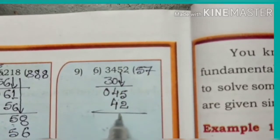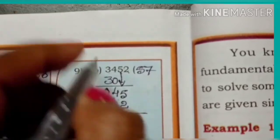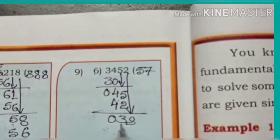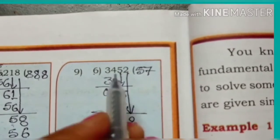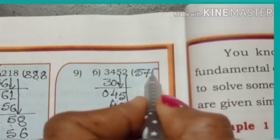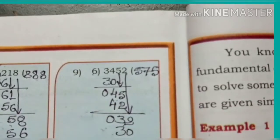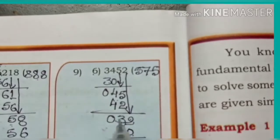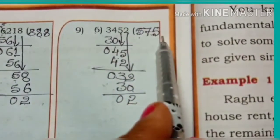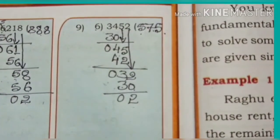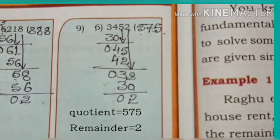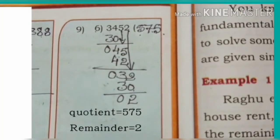5 minus 2 is 3, 4 minus 4 is 0. Bring down 2. Divide 32 by 6. 6 fives are 30. 2 minus 0 is 2, 3 minus 3 is 0. The quotient is 575 and remainder is 2.